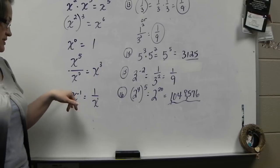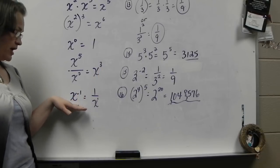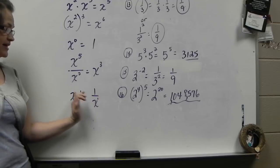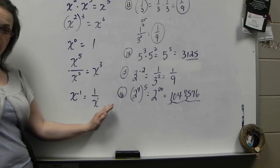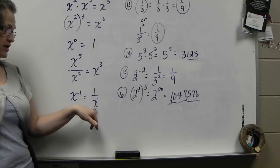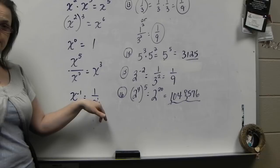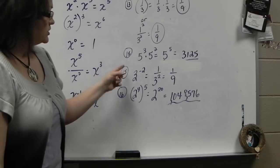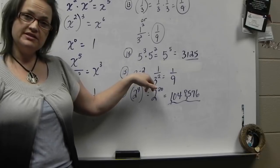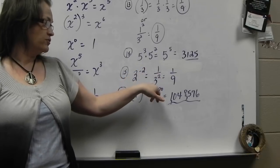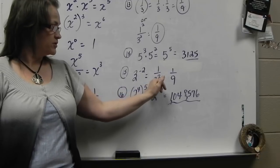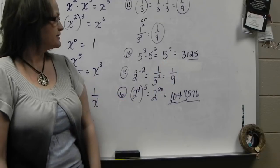Another rule you'll use is the negative exponent rule. If you have a base raised to a negative exponent, that's like division — it moves that to the denominator and makes the exponent positive. So x to the negative 1 is 1 over x to the positive 1; it makes it a fraction. We use that rule on number 15 of your study guide: 3 to the negative second power means 1 over 3 to the positive second, so it moves to the denominator. 3 squared is 9, so it's 1 ninth.